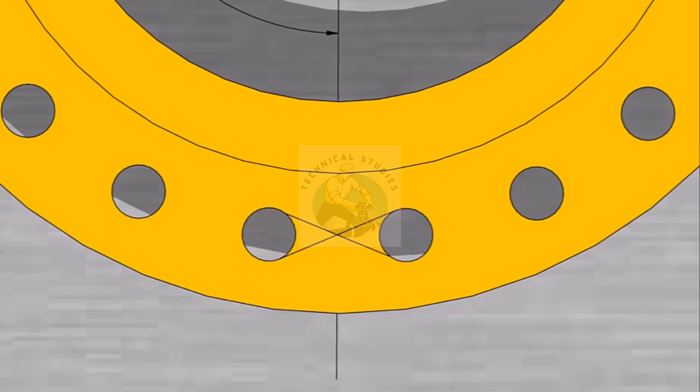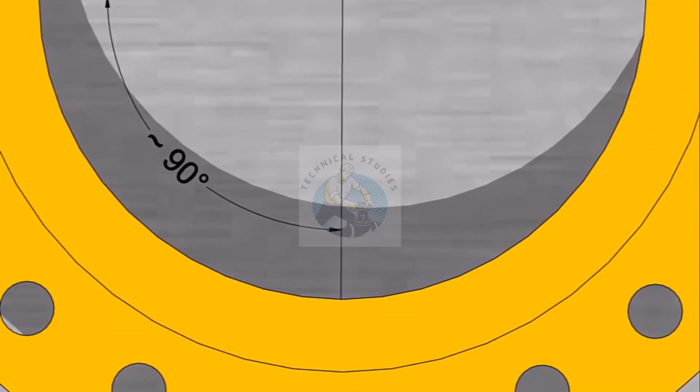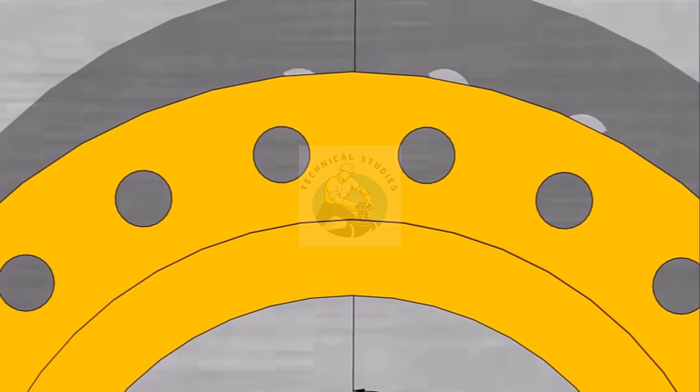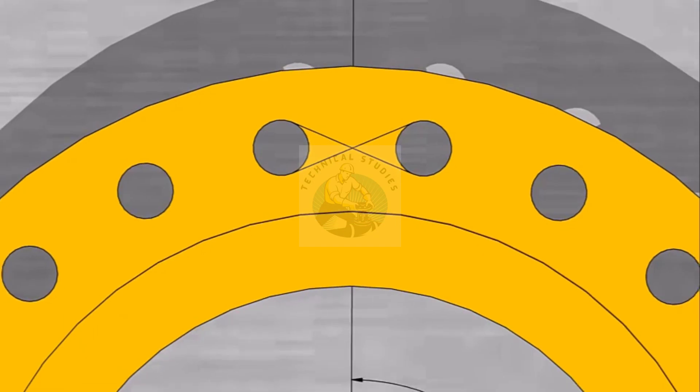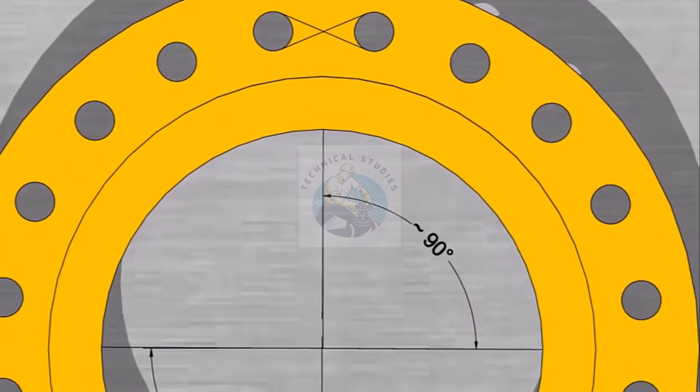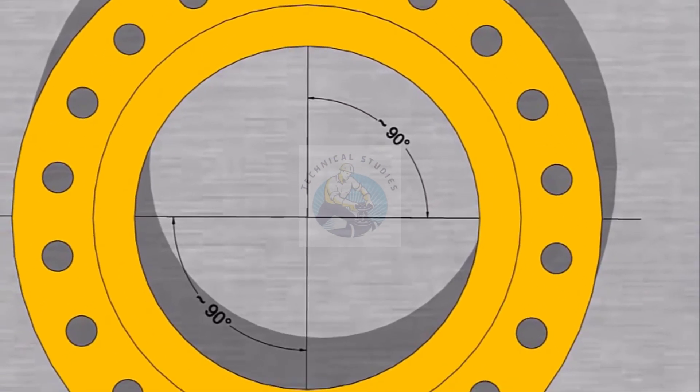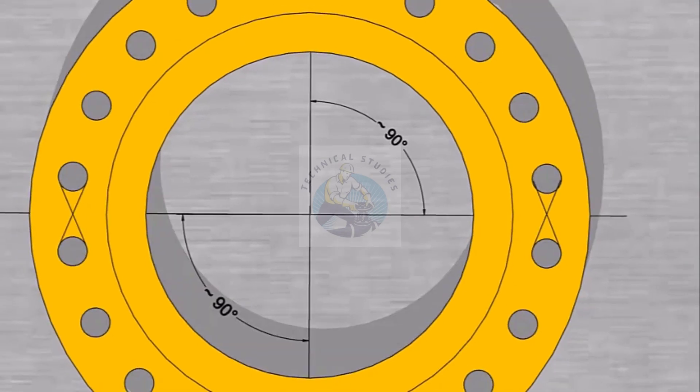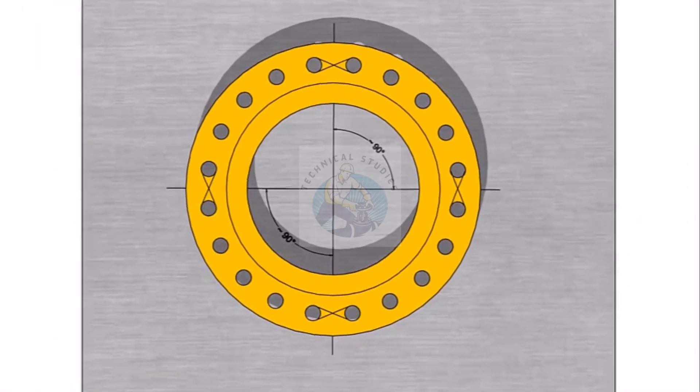Mark the center of the two holes opposite on the other side. Draw centers on 90 and 270 degrees, and mark the center lines.